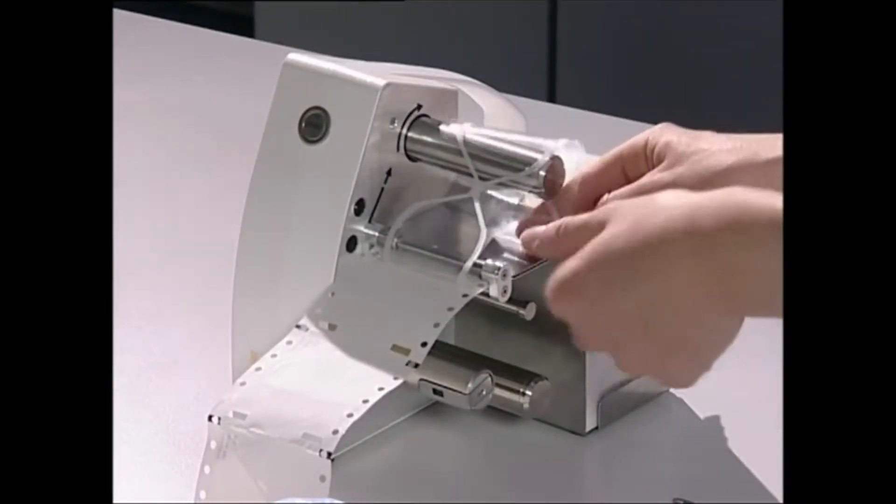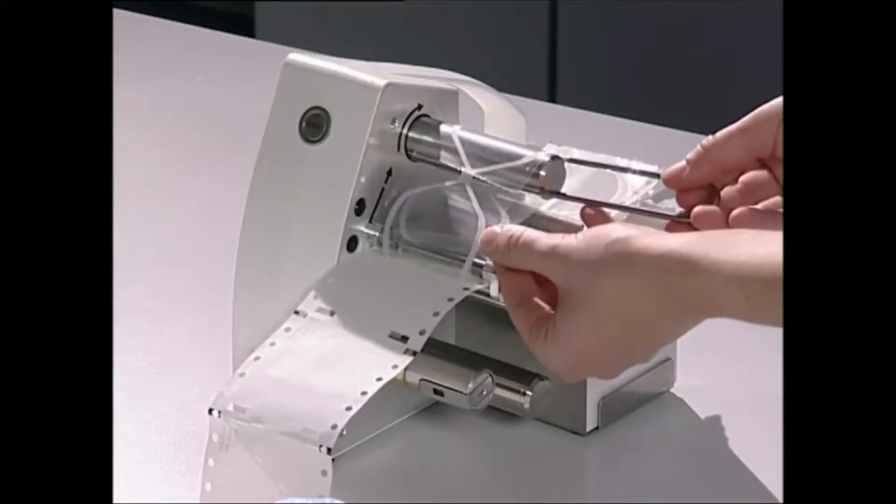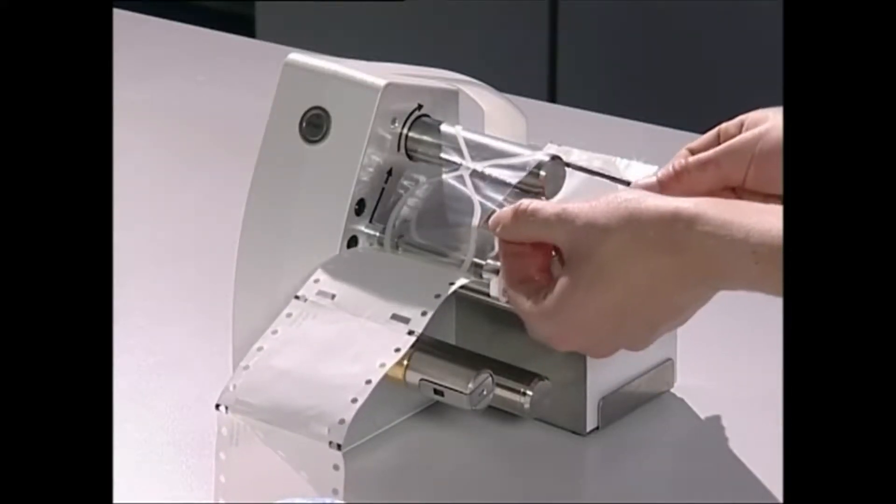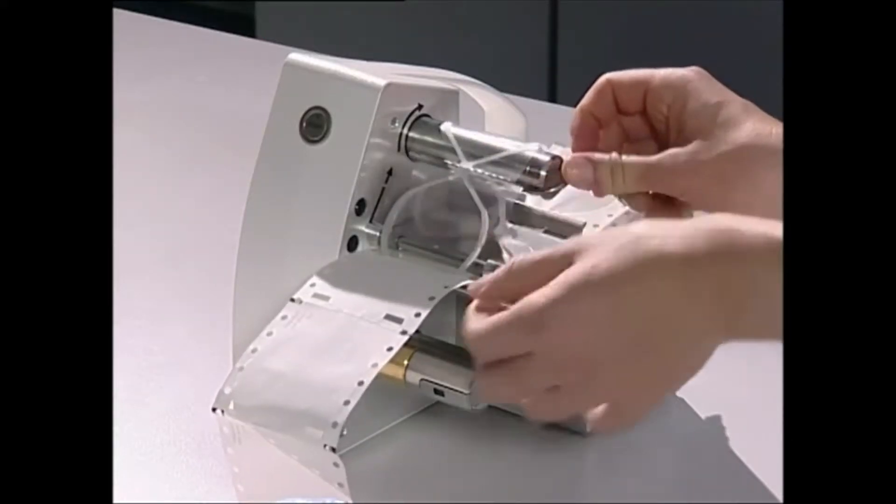Wrap the transparent film around the top winding roller so that it covers the two guide grooves. Push the holding clamp all the way into the guide grooves of the top winding roller.